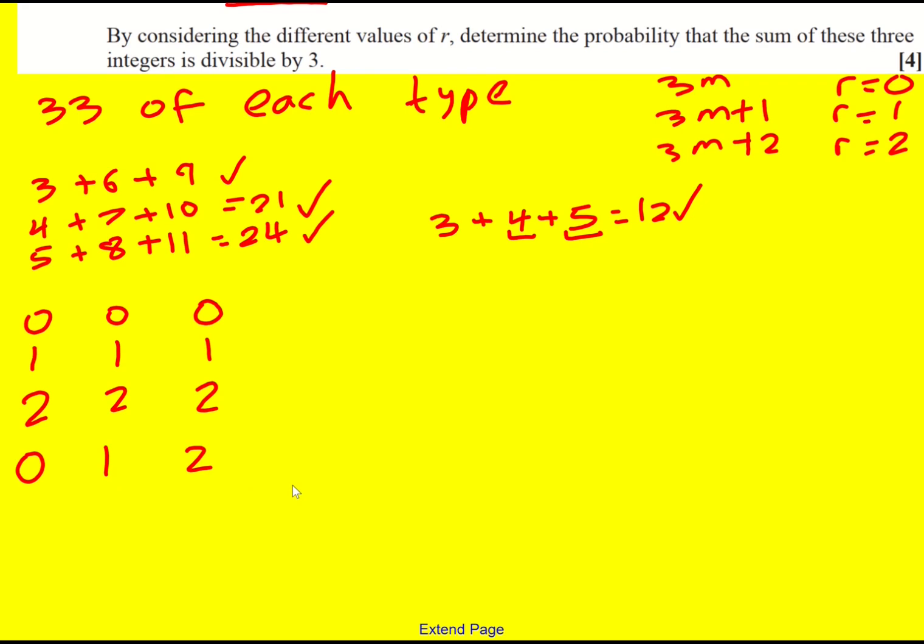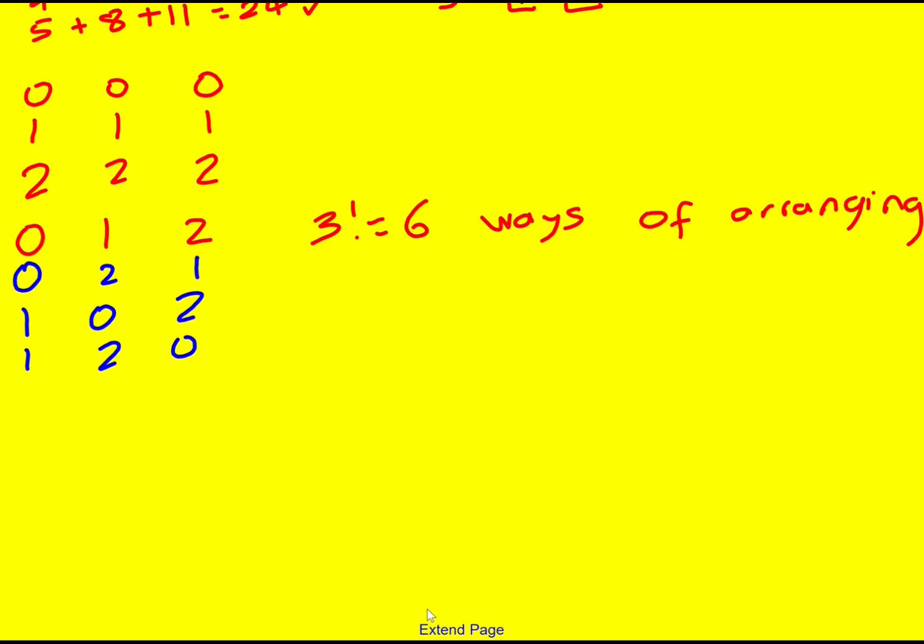So what we need to do is think about the number of arrangements of three things. And that's actually 6 factorial... Sorry, not 6 factorial, 3 factorial, which is 6 ways of arranging. This is actually linking into the statistics part of the course. If you're not too happy with that, then let's work them out systematically. So keeping the zero at the front, there's two options. Now putting one at the front, there's another two options. Putting two at the front, there's another two options. So those are the six listed. And you could do that if you wanted to.